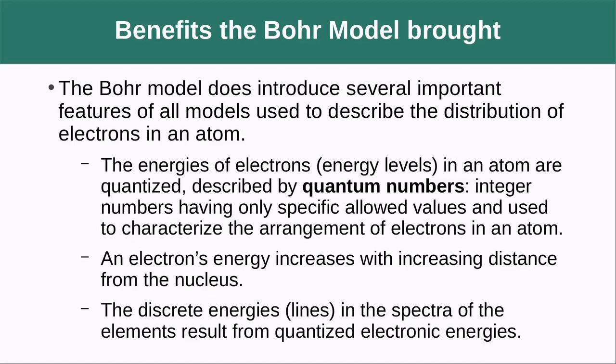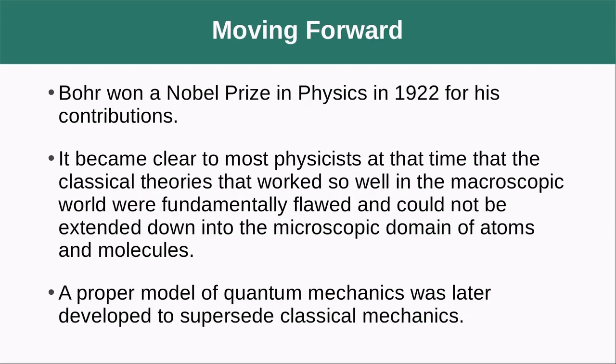The Bohr model does introduce several important features of all models used to describe the distribution of electrons. So it was a move forward. The energies of the electrons in an atom are quantized. They're described by quantum numbers. Integers, numbers having only specific allowed values and used to characterize the arrangements of electrons in an atom. An electron's energy increases with increasing distance from the nucleus. The discrete energies, lines in the spectra of elements result from these quantized energies.